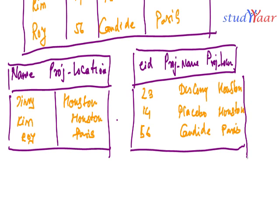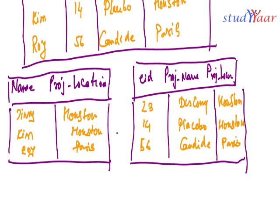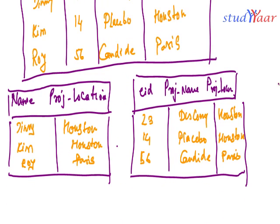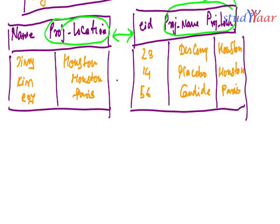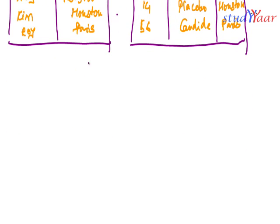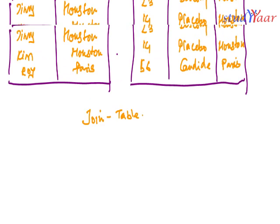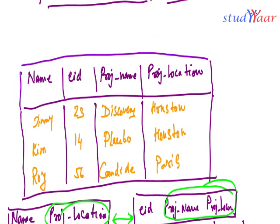Now let's suppose I take a join between these two tables. If I need to find out what project Jimmy is working on, I need to join these tables. I can take a join because project location is a foreign key in this context. Let's call the result a join table.